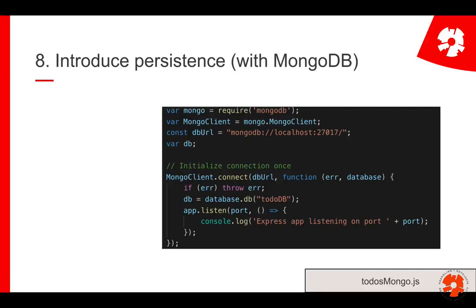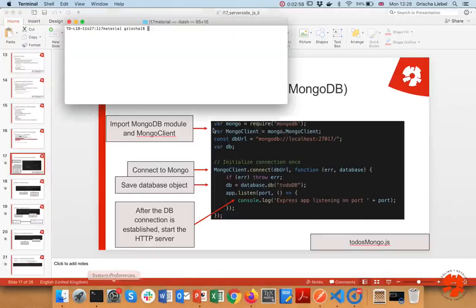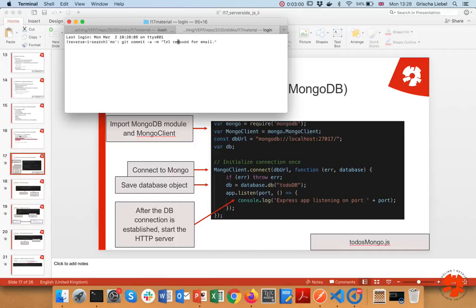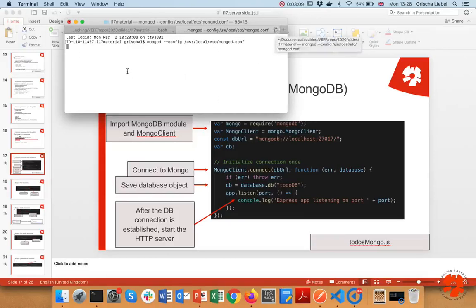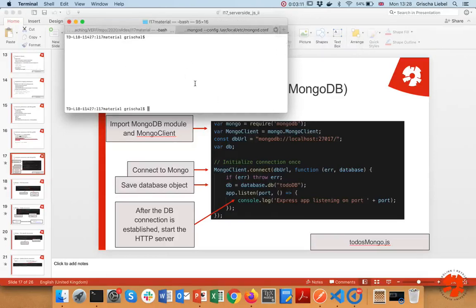When writing a persistent application, the first thing you need is to connect to your database, and for that you need to have it running. I have MongoDB installed on my computer. You run it like every other server — it's a blocking command, so you'll see it just running. Then go into a different tab to start your application.